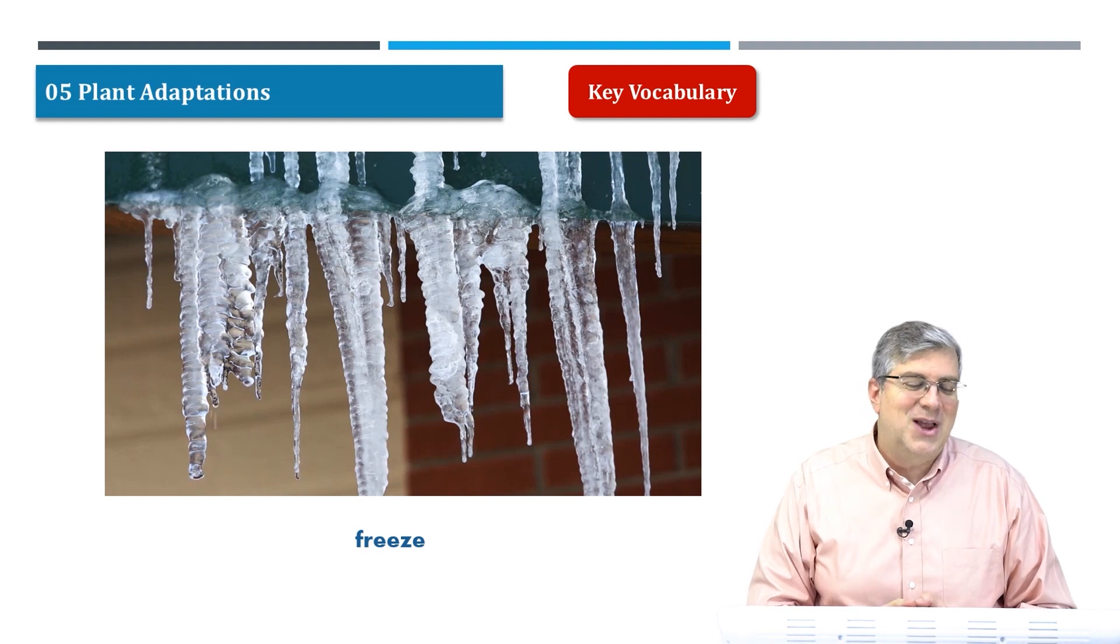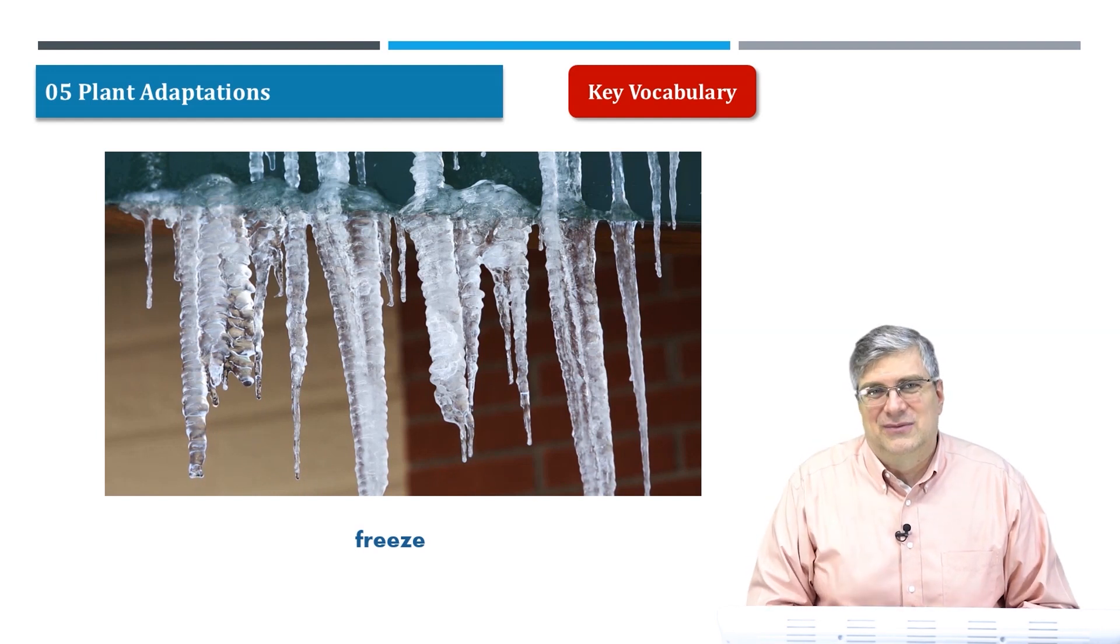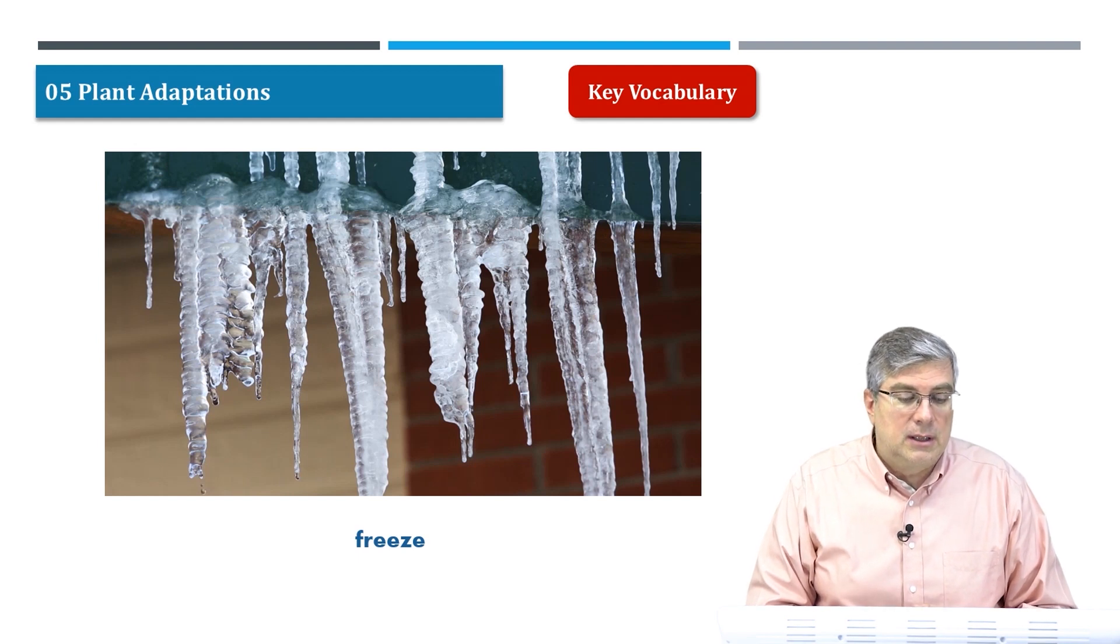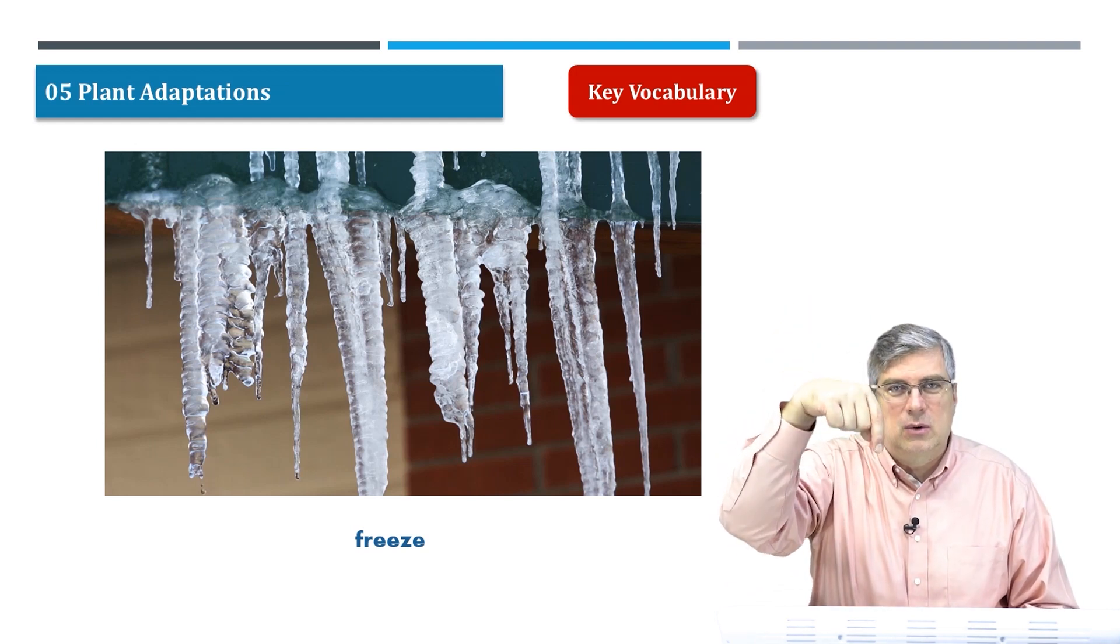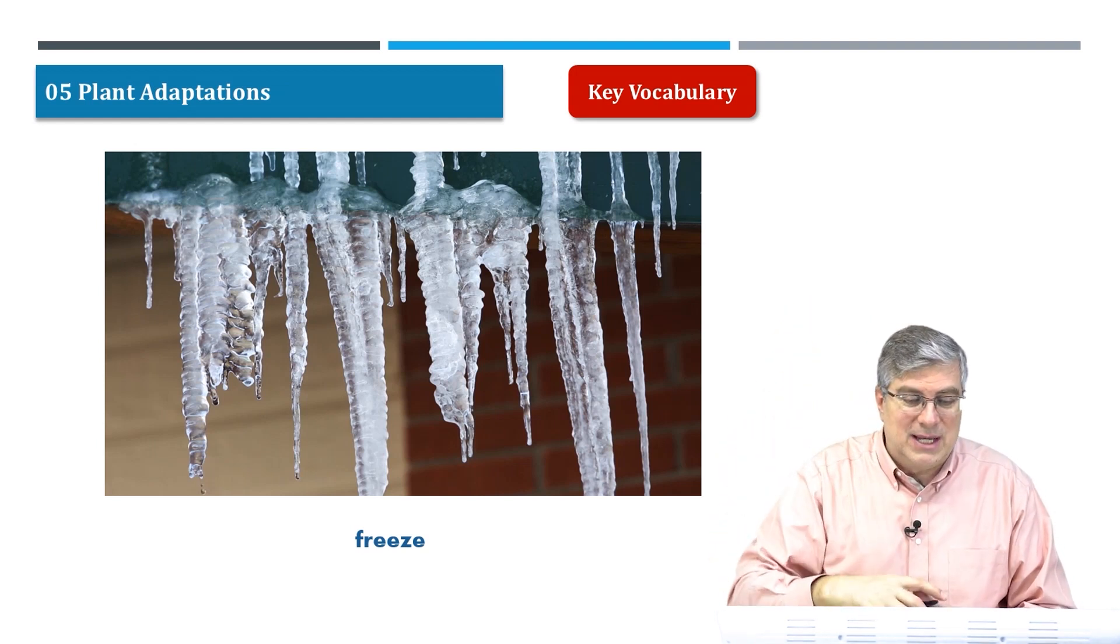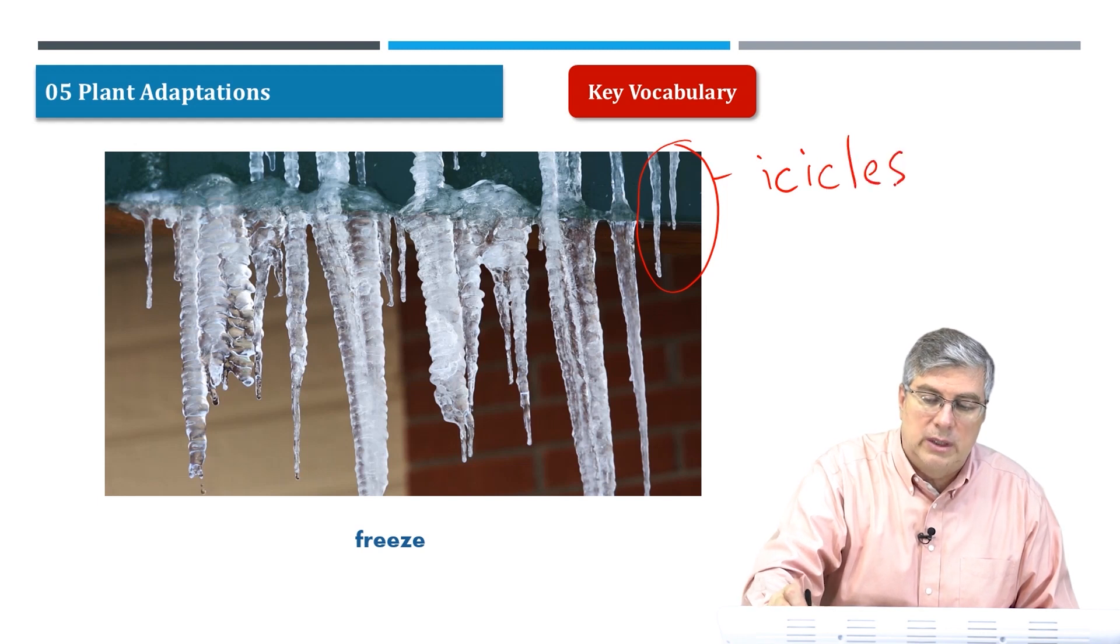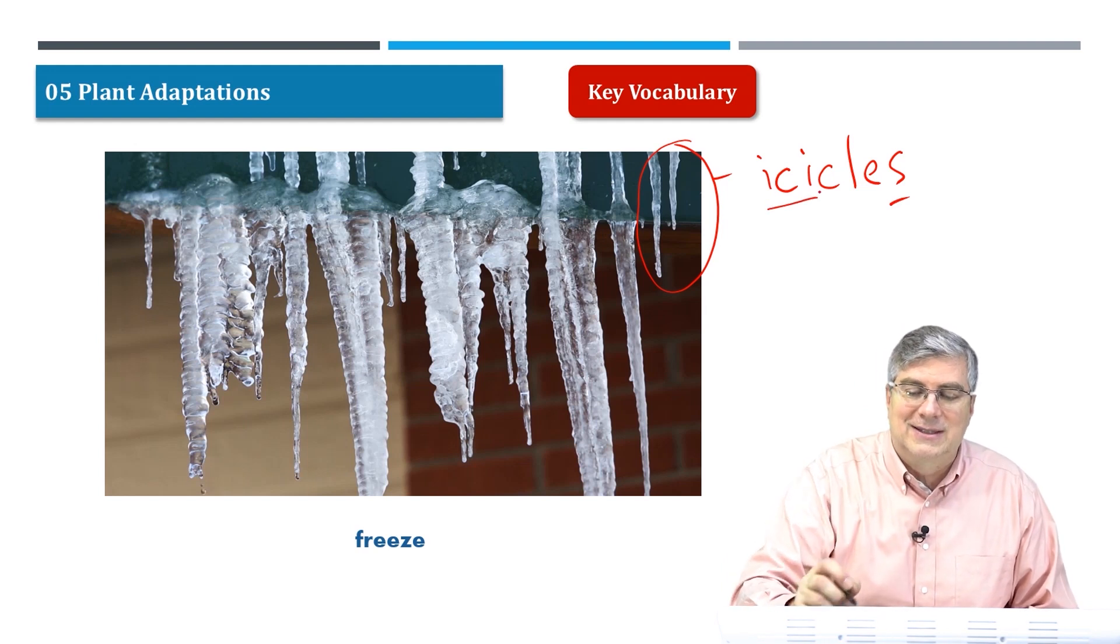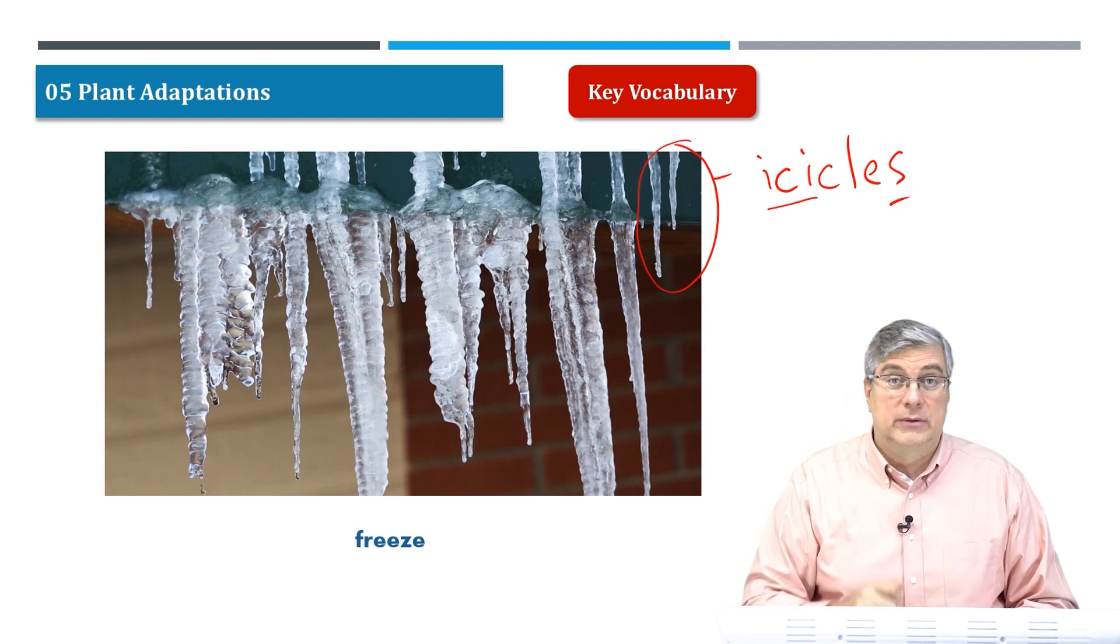Here we have a video of something freezing. Well, actually I could say this is melting, really the opposite of freezing. Here we have a picture of many—what do we call these things? When water drips down and it's so cold that it freezes as it's dripping down, we call these things icicles. There's more than one so we say icicles, the plural.